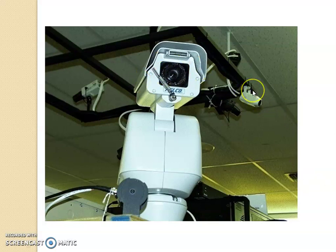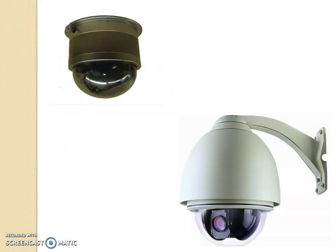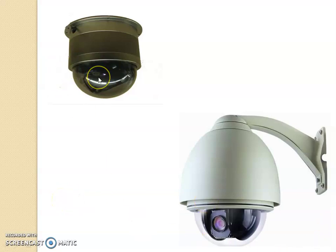Sometimes a PTZ has a wiper so that any condensation or humidity on the screen can be wiped out. PTZ dome is similar to the PTZ camera — the only difference is that the entire assembly comes with an enclosed dome. Here the camera can tilt 90 degrees and rotate 360 degrees, so the entire hemisphere can be covered. The camera cover can be either transparent or opaque.